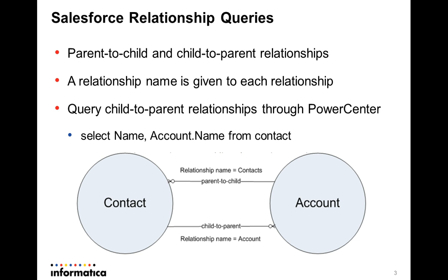The relationship queries in SOQL must traverse a valid relationship path across the involved Salesforce objects. Such relationships exist between many types of objects. For example, the object Contact and object Account are related, and Account is a parent of Contact.